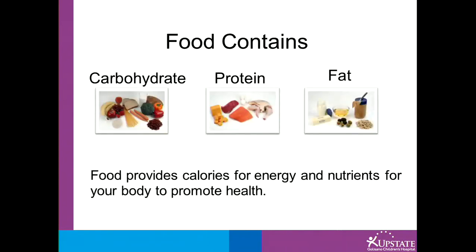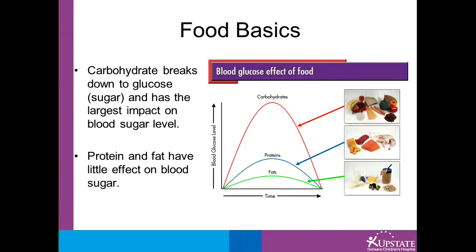Food contains carbohydrate, protein, and fat. These provide calories for energy and nutrients to keep your body healthy. Carbohydrate breaks down to glucose, which is another word for sugar. It has the largest impact on blood sugar level. Protein and fat have little effect on blood sugar.